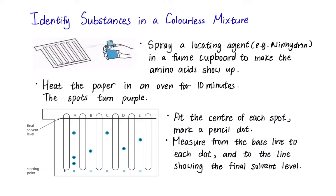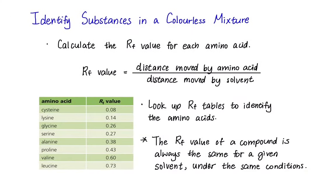Then at the center of each spot, mark a pencil dot and measure from the baseline to each dot and to the line showing the final solvent level. With the measurements we have done, we can calculate the RF value of each amino acid. RF value is calculated by dividing the distance moved by amino acid with the distance moved by solvent. After calculating it, we can look up the RF tables to identify the amino acids as the RF value of a compound is always the same for a given solvent under same conditions.